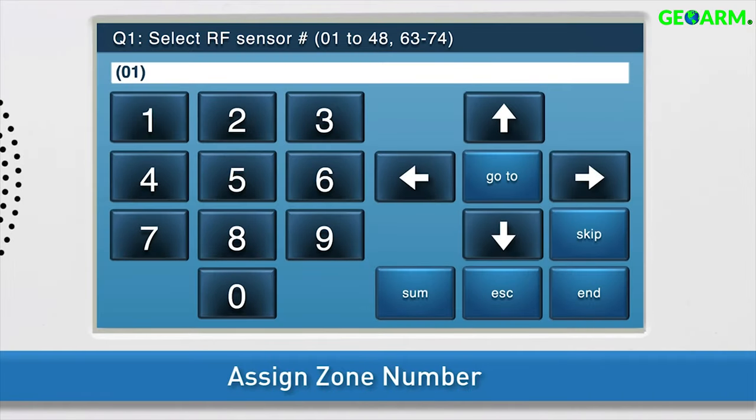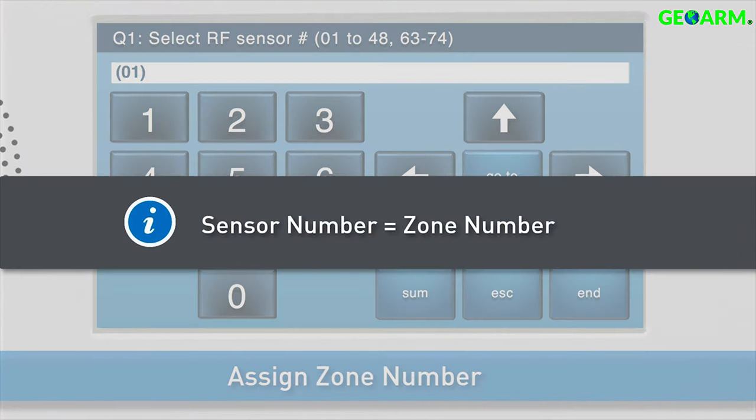First, you'll want to decide which zone number to assign to the thin door window contact. Note, the words sensor and zone are interchangeable. In this training, we'll use the term zone number.